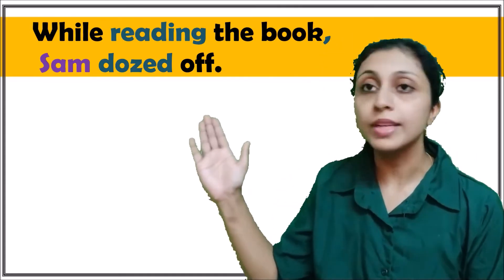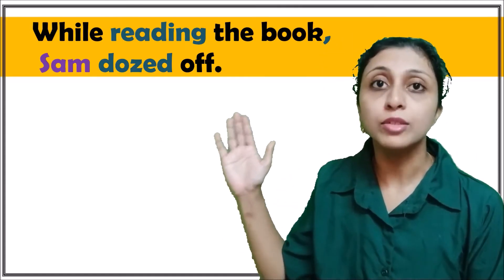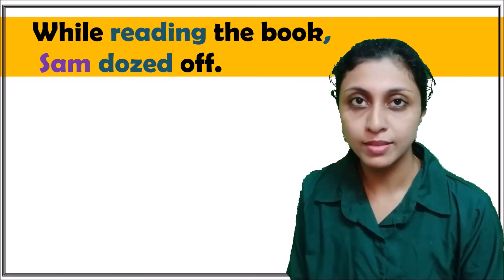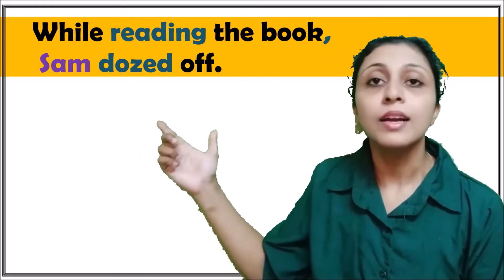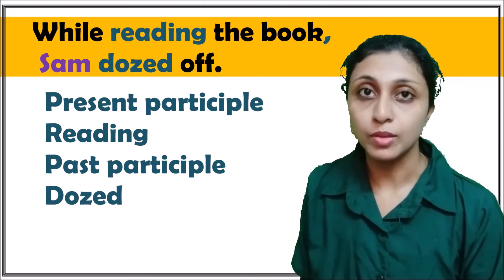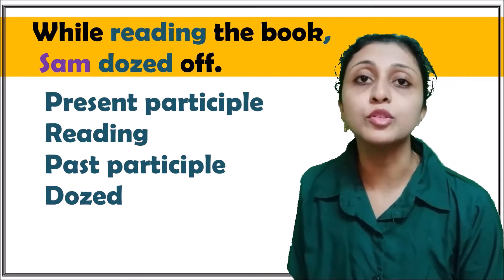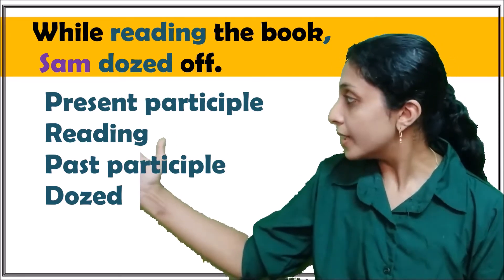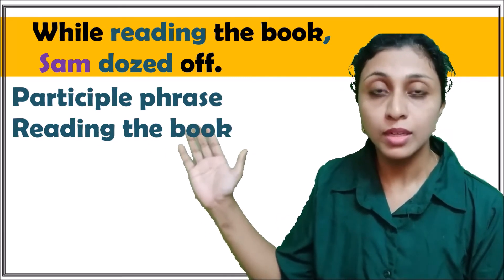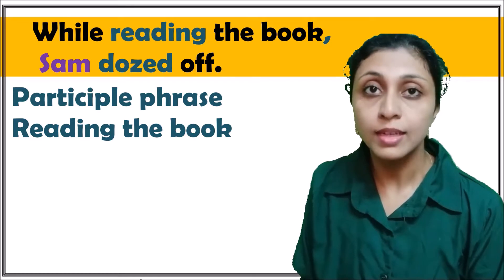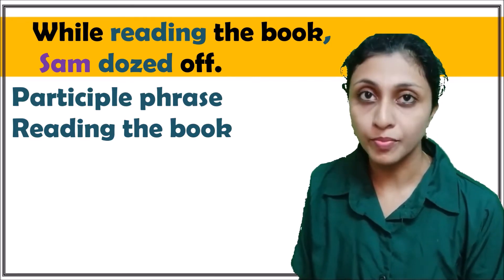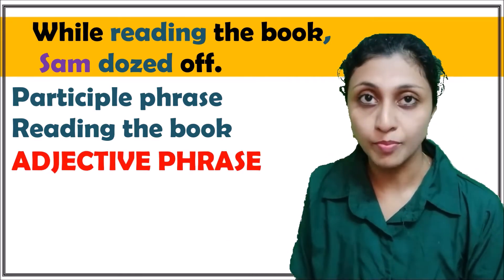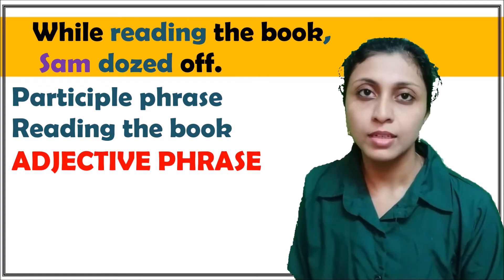Consider this sentence: 'While reading the book, Sam dozed off.' In this sentence, 'reading' is the present participle and 'dozed' is the past participle. 'Reading the book' is a participle phrase, since the headword is 'reading'. This phrase can also be called an adjective phrase.